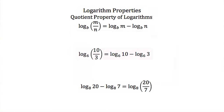The next property we're going to discuss is the quotient property of logarithms. This is just like the product property, except here we're dealing with division. The quotient property tells us that if we're taking the log of two numbers — one divided by the other, in this case m divided by n — that's equal to the log of m minus the log of n. We have to have the same base throughout the expression.